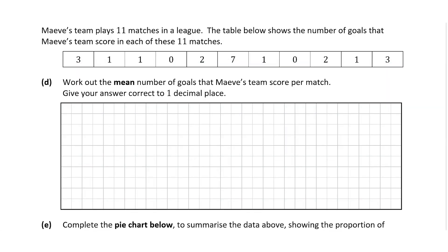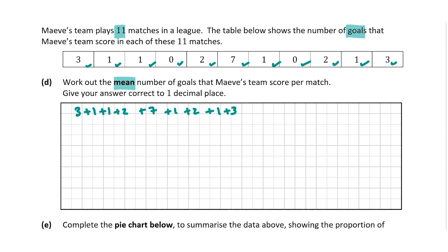In question D we're dealing with the mean. Maeve's team plays 11 matches in a league and the table shows the number of goals scored in each match. We're asked to find the mean number of goals per match, correct to one decimal place. To do this we add up all the goals from all 11 matches and divide by 11. So that's three plus one plus one plus zero plus two plus seven plus one plus two plus zero plus one plus three, divided by 11.